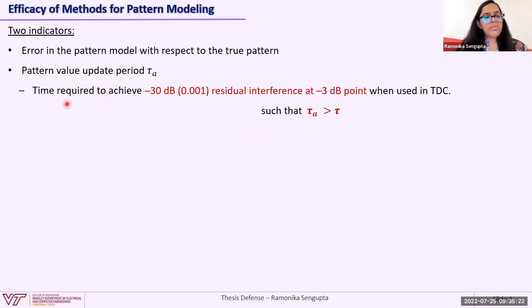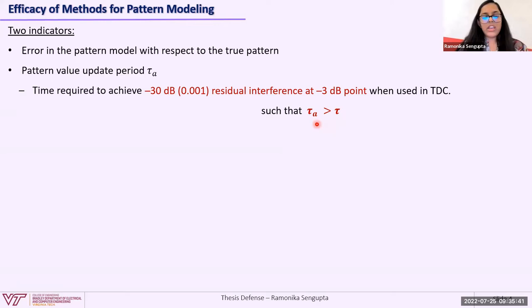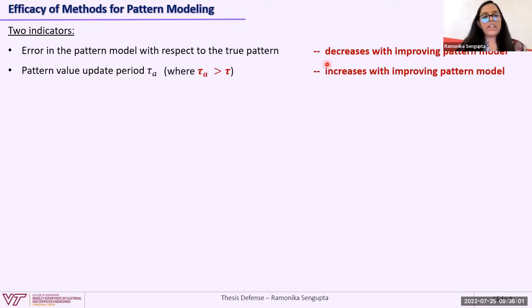The specified level of residual interference is minus 30 dB at the half power point or minus 3 dB point in the main lobe. In other words, tau_A is the time required to achieve minus 30 dB — or 0.001 in linear units — of residual interference at the minus 3 dB point in the main lobe. Note that tau_A should be greater than tau. To improve the performance of TDC, we can either increase tau_A or decrease tau. We try to increase tau_A by improving the pattern model. Summarizing: error in the pattern model decreases and tau_A increases with an improving pattern model.